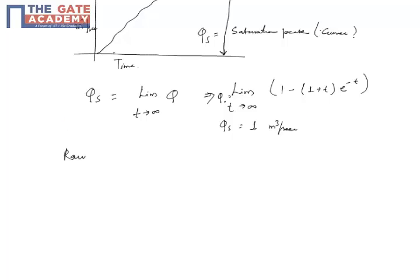Rainfall intensity is equal to 1 centimeter per hour. Converting in meter per second, we get 1 by 10^(-2) meter divided by 3600.